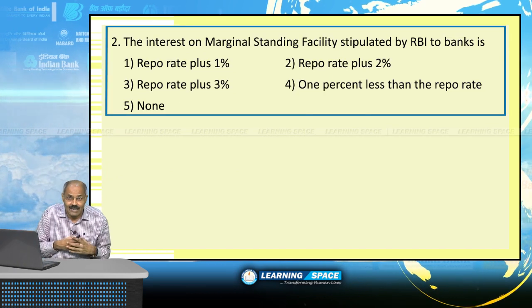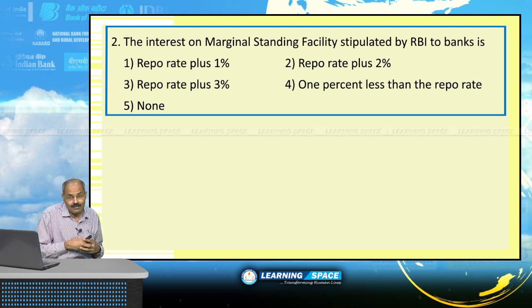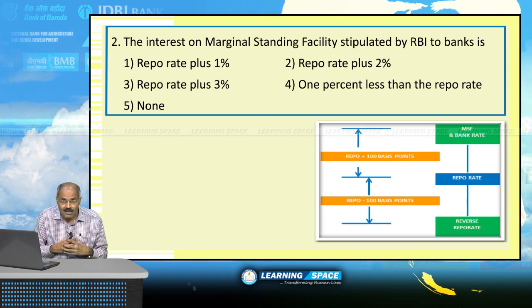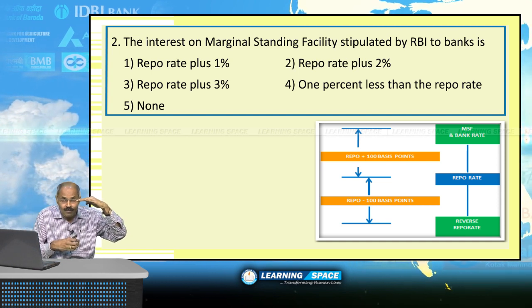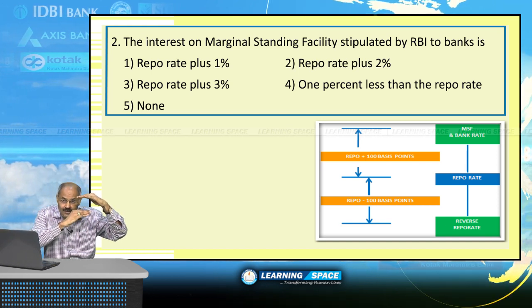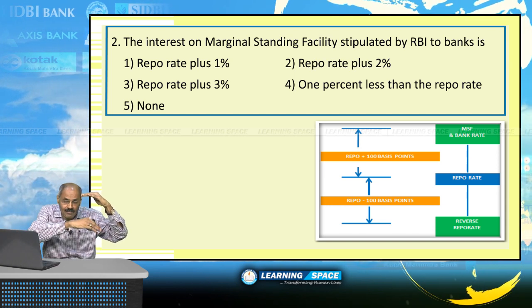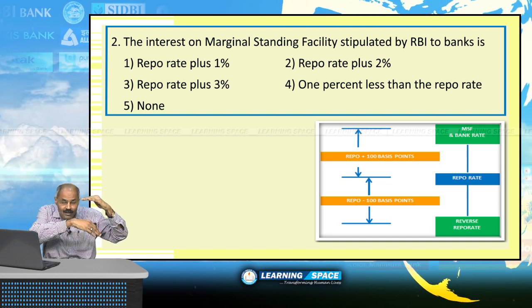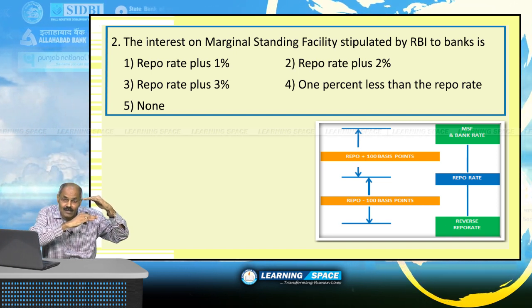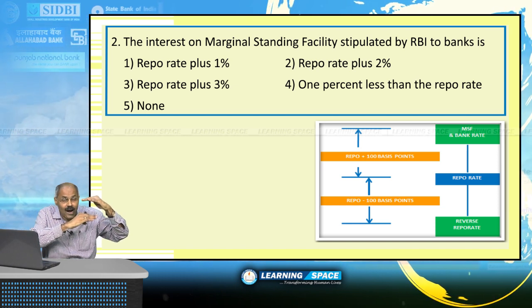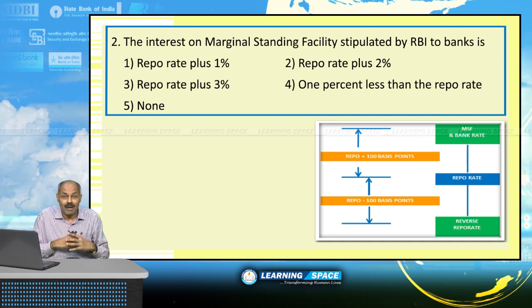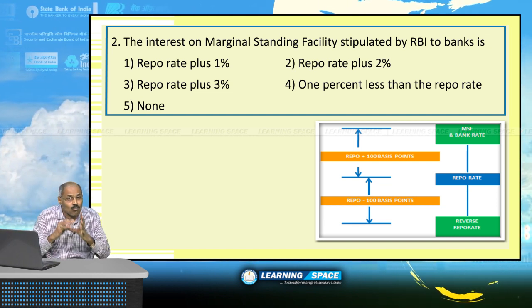The interest on marginal standing facility stipulated by RBI to banks — as per the present monetary policy, repo rate will be announced, and reverse repo rate will be 1% less than repo rate. When banks park their money with RBI, the interest paid by RBI is the reverse repo rate. Reverse repo is 1% less than repo, or 100 basis points. 100 basis points means 1%; 1 basis point is 0.01%.